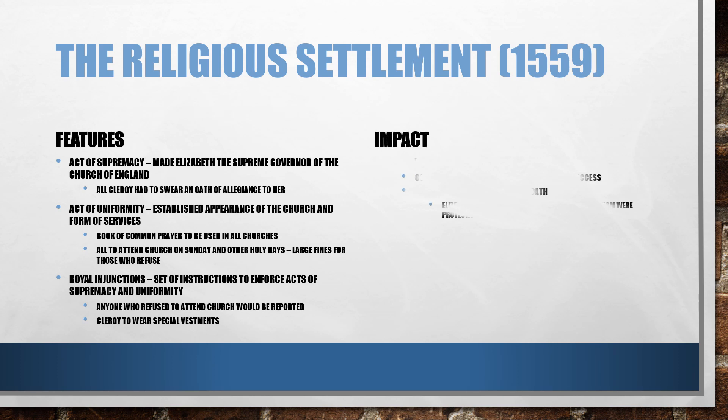In terms of the impact of the religious settlement, around 8,000 priests took up the oath of supremacy, which would be considered a success. However, further up the hierarchy, out of 28 bishops in England at the time, only one took the oath regarding the Act of Supremacy. Therefore all 27 of the remaining bishops had to resign and Elizabeth had to appoint 27 new bishops, all of whom were Protestant.